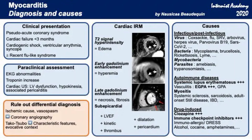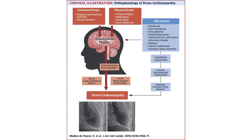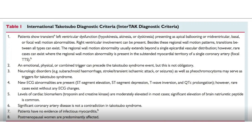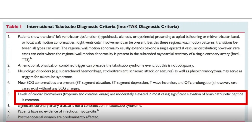The most common MINOCA mimiker is myocarditis. Myocarditis presents acutely with chest pain or dyspnea, ECG changes that can be diffuse or territorial, and troponin elevation. It is the primary differential diagnosis when considering MINOCA and can be confirmed only by biopsy or cardiac MRI. Stress-induced cardiomyopathy — Takotsubo — is another major mimiker. We usually see it in postmenopausal women after an emotional or acute stressful trigger, presenting with chest pain, ECG abnormalities, troponin elevation, and no obstructive coronary disease on angiography.